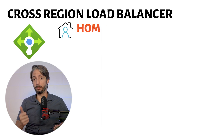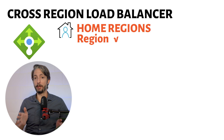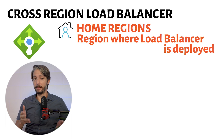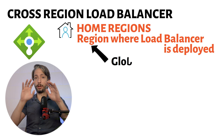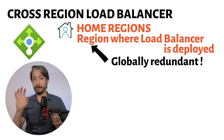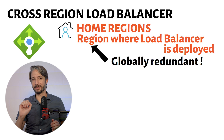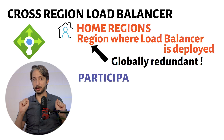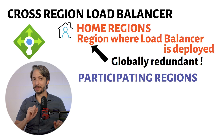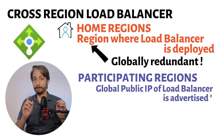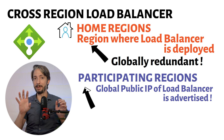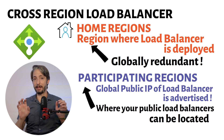There are two concepts you need to know with regards to cross-region load balancers. There is something called home regions — this is the region where the load balancer is deployed, and there are only a few selected home regions. Even if you deploy a cross-region load balancer in West Europe, this service is still globally redundant; if the home region goes down the traffic is not affected. Then there are participating regions, which are by count many more than home regions. These are where the global public IP address of the load balancer is being advertised, meaning this is where your public load balancers can be located and traffic routed to accordingly.